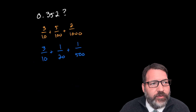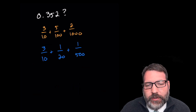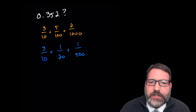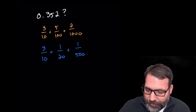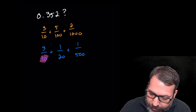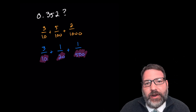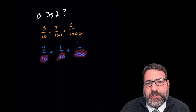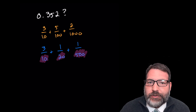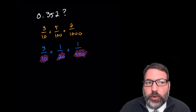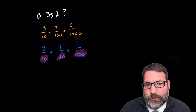In our base ten decimal number system, the only kinds of decimals that terminate are those where, when we represent them as fractions, the denominators always work out to something that only has twos and fives as factors. Any fractions where the denominator has factors other than two and five will be repeating decimals in some representation.